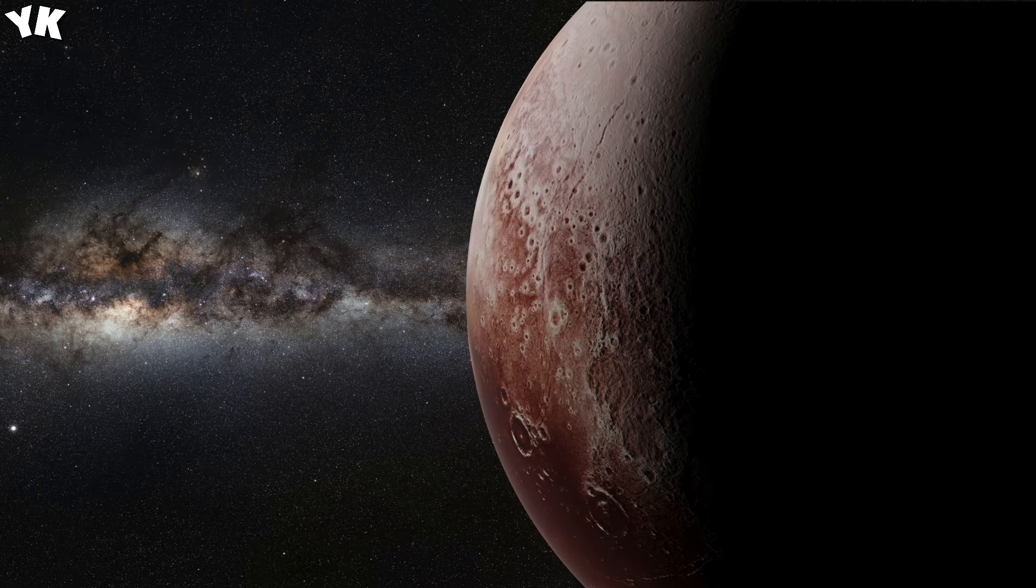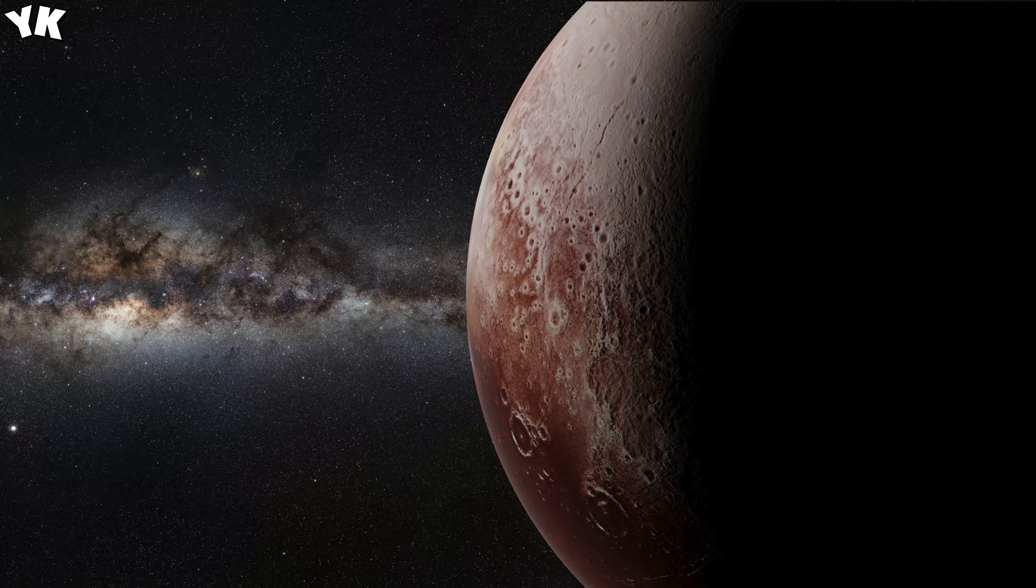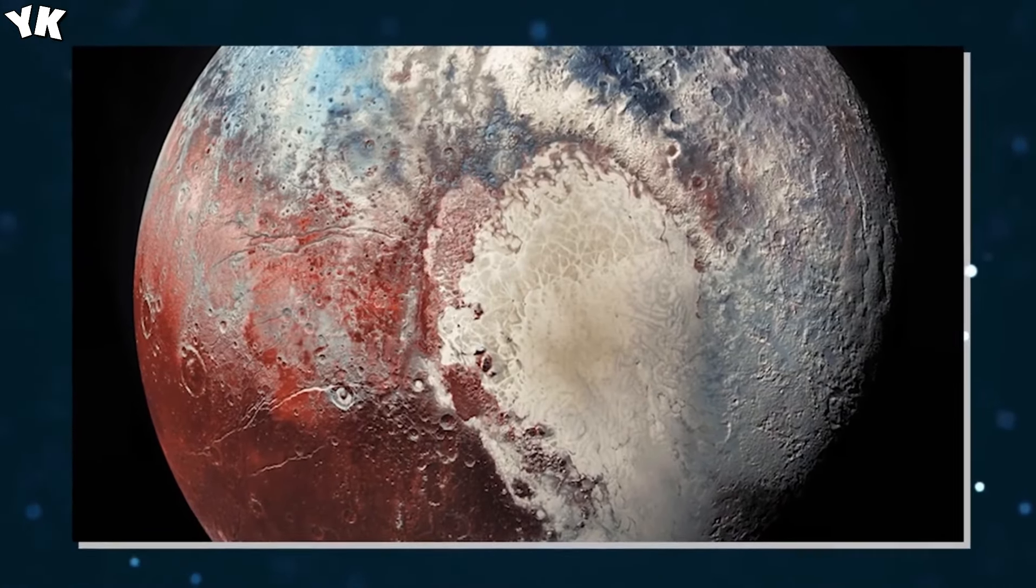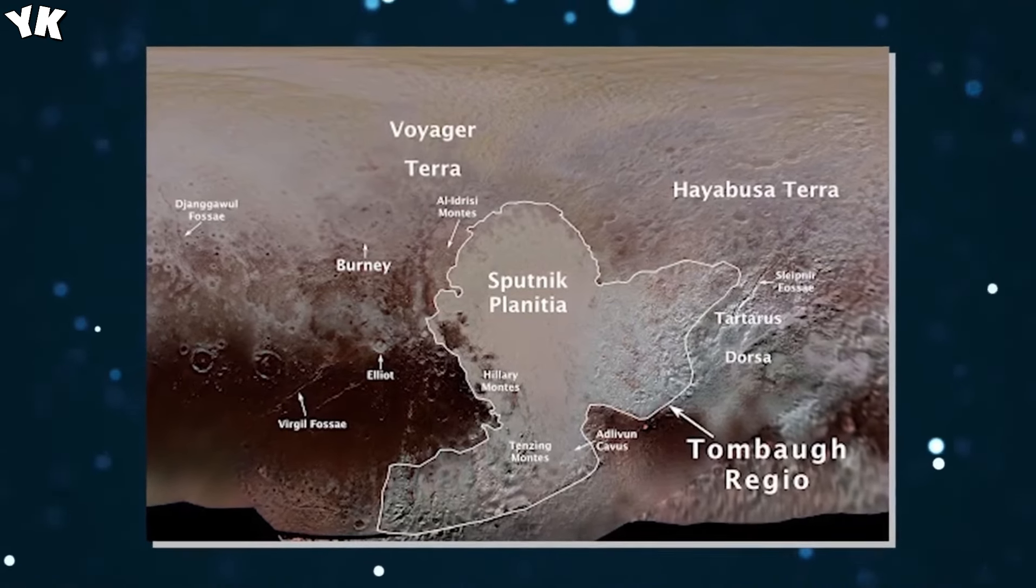The prevailing theory posits that Pluto's ocean initially froze but later partially melted due to heat from decaying radioactive elements in its rocky core. This expansion and contraction likely resulted in surface wrinkles and cracks, with New Horizons images primarily showing cracks, suggesting the ocean started as liquid and gradually froze over time.